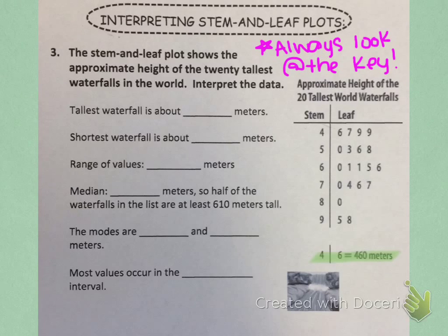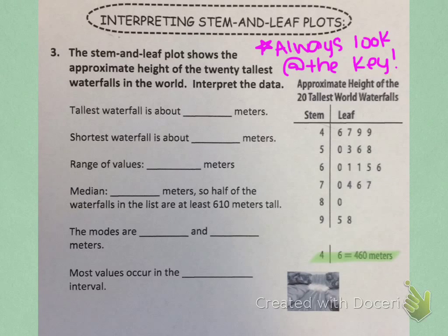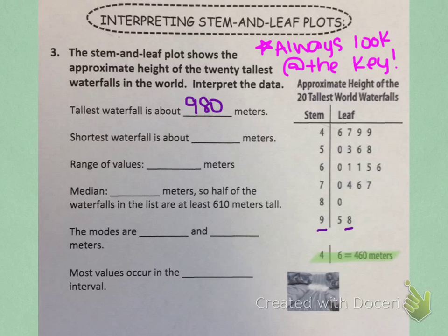Now that we know that, we can look at the stem and leaf plot and interpret the data. Let's start with the tallest waterfall. Stem and leaf plots are listed in order from least to greatest, so the last number is the greatest value and that will be the tallest waterfall. The last stem is 9 and the last leaf is 8. The 9 represents 900, and the 8 represents the tens, so that's 80. The tallest waterfall in the world is about 980 meters.